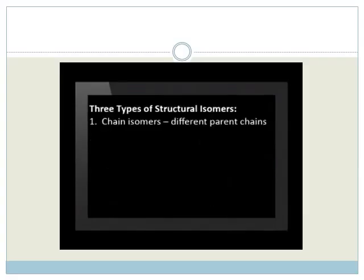There are three types of structural isomers. The first examples that we have seen so far are the chain isomers. They have different parent or backbone chains.